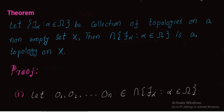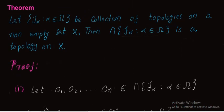Welcome students, I am Muhammad Naveed and you are watching my YouTube channel. In this video lecture we are going to prove that the intersection of any number of topologies on a set forms a topology on that set. This can be stated as: let τ_α, where α belongs to Ω, be a collection of topologies on a non-empty set X. Before starting the proof, if you are new to my YouTube channel, please subscribe first.